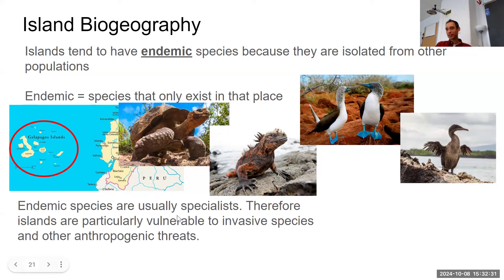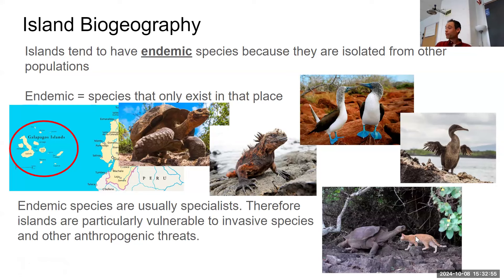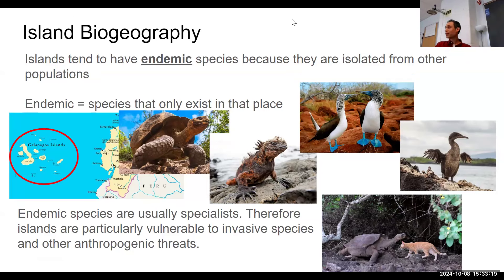Endemic species are usually specialists because islands have very specific niches and habitats, so they evolve to very specific conditions. Therefore islands are particularly vulnerable to invasive species and other anthropogenic threats. The Galapagos Islands have been very sensitive to this — people brought pets, feral cats got loose, and they eat birds and are a highly threatening invasive species. That is the end of our lecture.